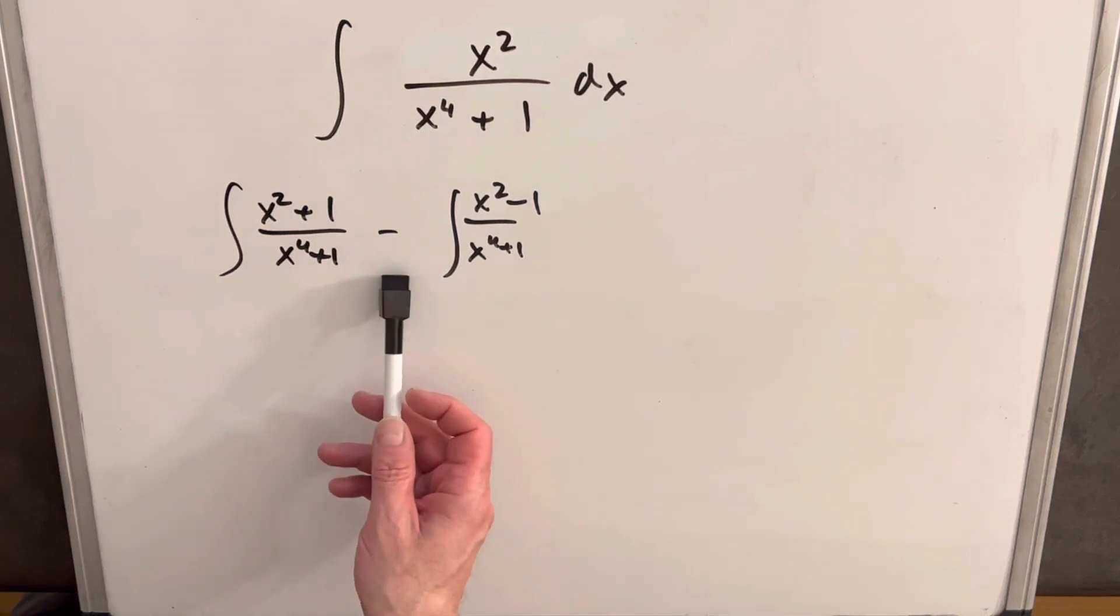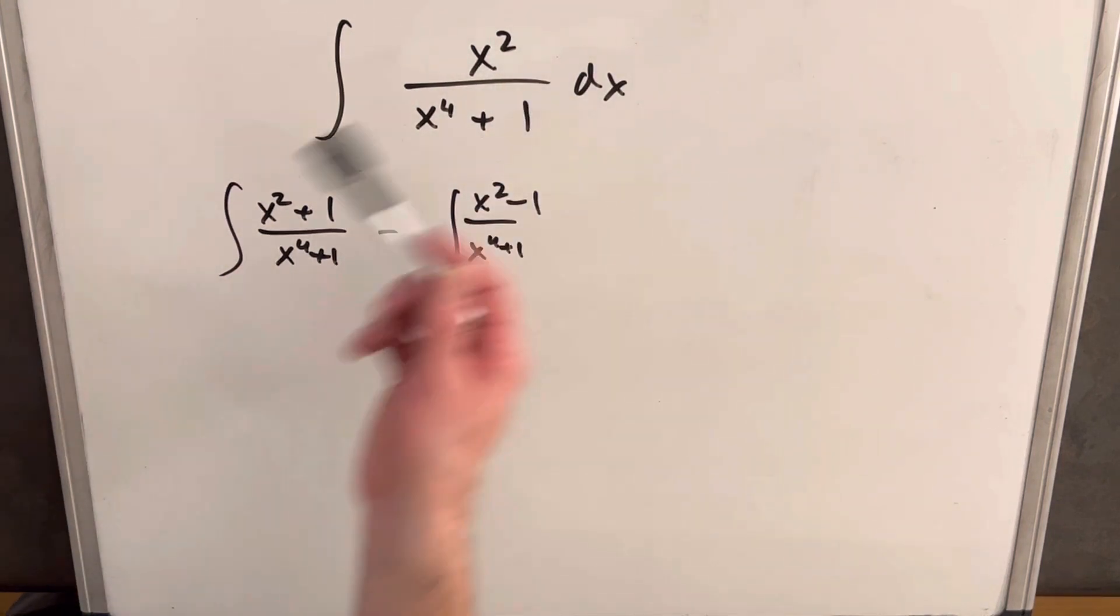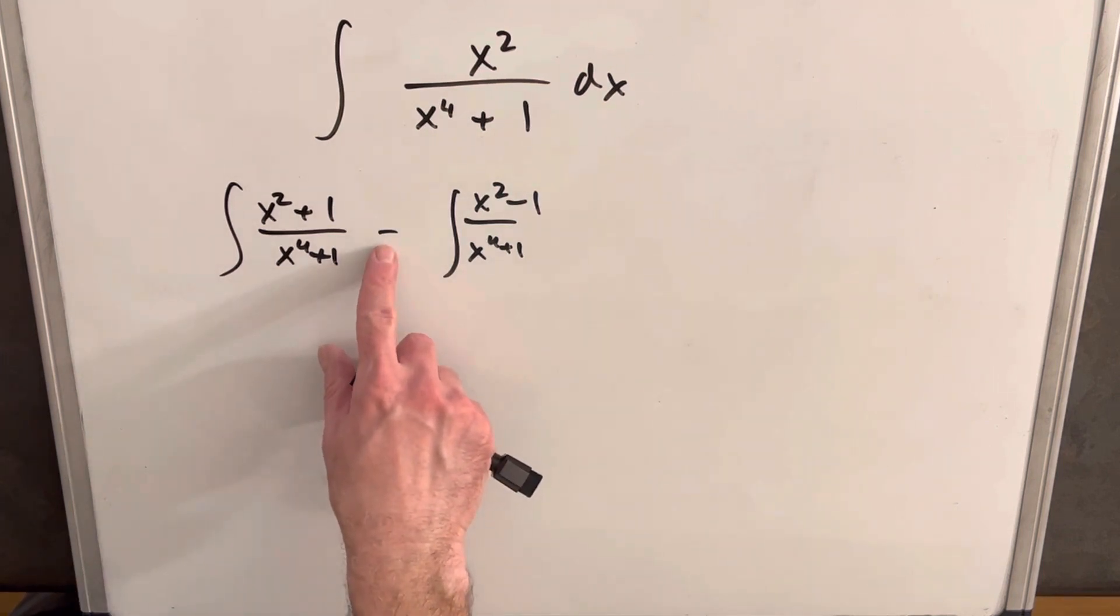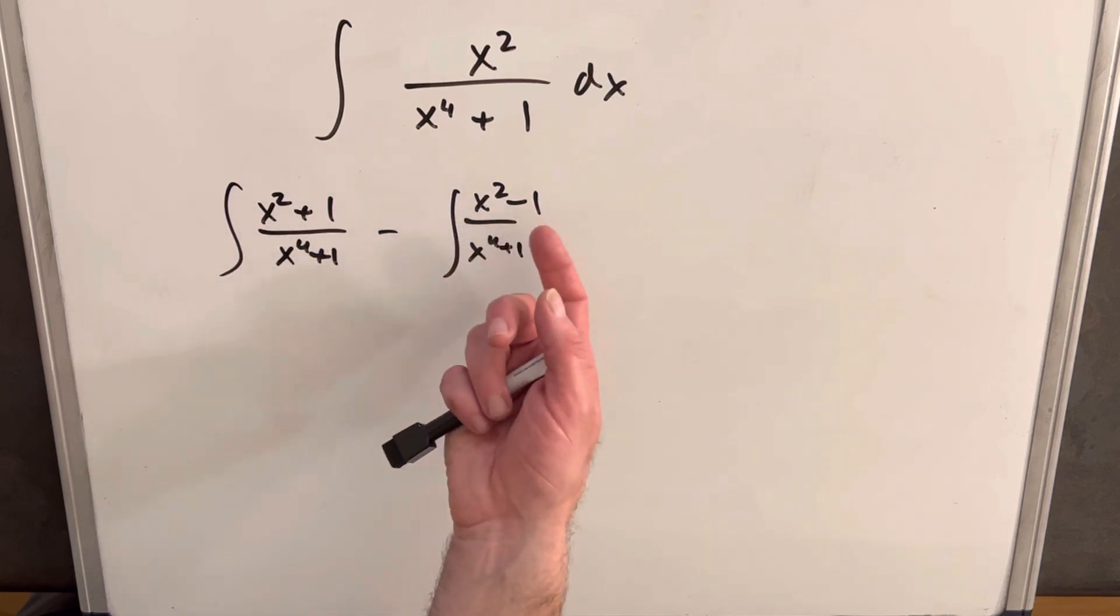This is nice, but we can't change our numerator. We have an x squared up here and we can't mess with that. If we just look at what happens when we put these together in the numerator, the x squareds are going to cancel and we're going to have a 2.